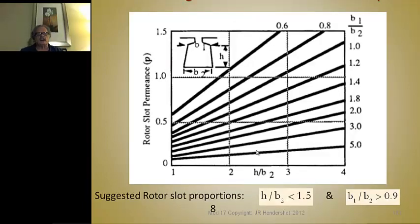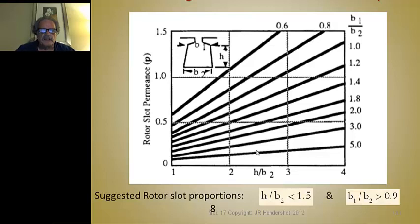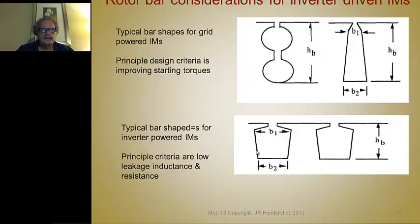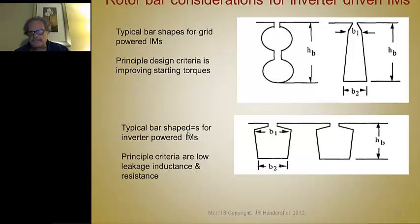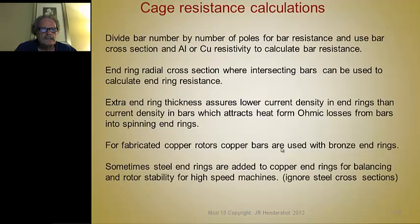Here's a plot of rotor leakage as a function of rotor slot shape — I believe this came from Lippo's book — showing suggested rotor slot proportions, which can be very helpful for design. Here are also some bar shapes. The double bar at the top — there's no good reason to use that. These are the typical bar shapes we'll use for inverter-driven machines.